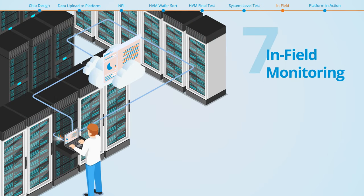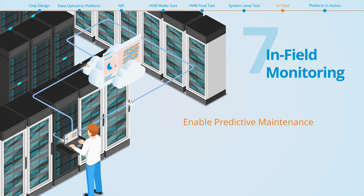Reading the agents to the platform on an hourly, daily or weekly basis enables continuous monitoring in the field. This monitoring provides valuable insights to detect performance degradation and monitor reliability throughout the product lifecycle. This capability supports predictive maintenance strategies and allows customers to detect faults before they become catastrophic failures.